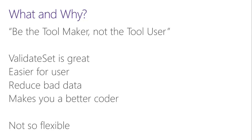One thing I do is use a thing called ValidateSet, which is an attribute for a parameter. I write all of my PowerShell as modules and functions. ValidateSet is an attribute you can set on a parameter that gives a set of allowed values — like who's your favorite kid, you put your kids' names in there. That keeps the tool user from putting in a bad value, and it also allows them to tab through the options. It makes your stuff easier for the end user and reduces bad data.